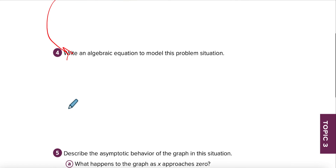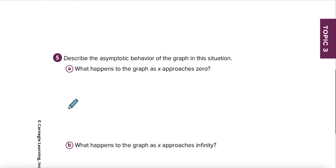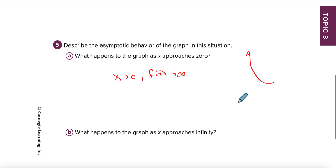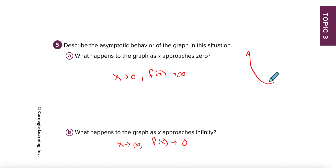Describe the asymptotic behavior of the graph in this situation. What happens as x approaches zero? Our y values approach infinity — they are going way up, and that makes sense because the fewer dollars we're saving each week, the more weeks it should take. What happens as x approaches infinity? f of x approaches zero. This makes sense too — the more we save, the fewer weeks it should take.